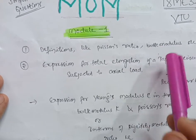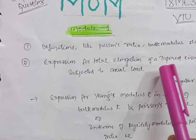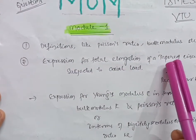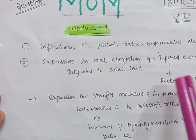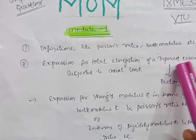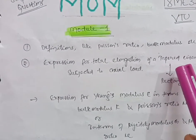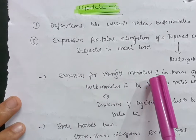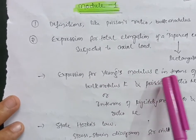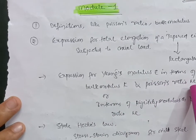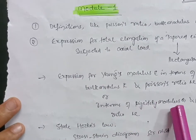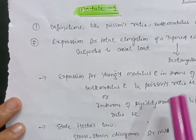Also, the expression for total elongation of a tapered circular bar is an important derivation. The most probable question is the tapered circular bar derivation; they have asked this most of the time. Then the expression for Young's modulus E in terms of Bulk modulus K and Poisson's ratio mu is in the second part of Module 1.